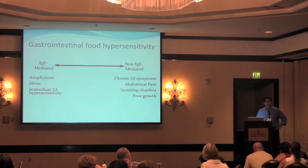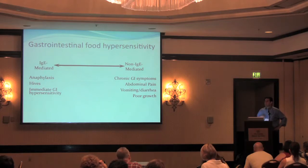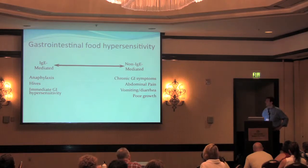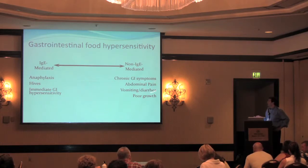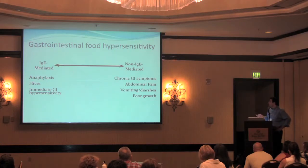Non-IgE-mediated allergies tend to be more chronic — they don't depend on a preformed antibody; it's more a general reaction of the immune system. That tends to lead to more chronic symptoms because they don't happen immediately. It's harder to put them together because it's not the child who has a glass of milk and immediately starts vomiting. It's the child who has a glass of milk every day, and then over a period of years starts complaining about their belly hurting all the time, or they just don't grow well. With these types of allergies, you typically see chronic symptoms: pain, vomiting, diarrhea not related to a specific food, and poor growth.